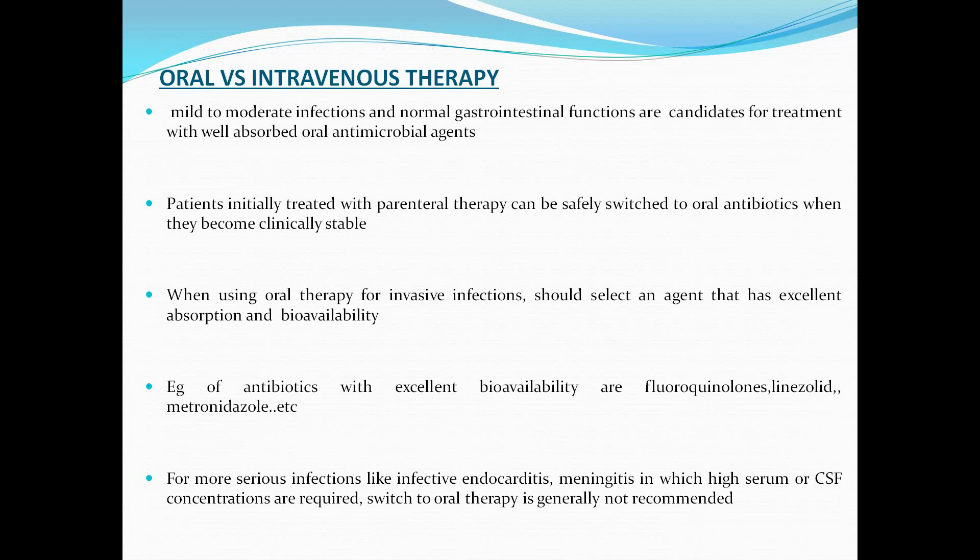Coming to oral versus intravenous therapy. Mild to moderate infections can be treated with oral antimicrobial agents, whereas patients initially treated with parenteral therapy can be safely switched to oral antibiotics when they become clinically stable. When using oral therapy for an invasive infection, one should select an agent with excellent absorption and bioavailability. Examples of antibiotics with excellent bioavailability are fluoroquinolones, linezolid, and metronidazole. For more serious infections like infective endocarditis and meningitis, switching to oral therapy is generally not recommended.